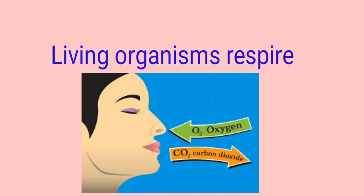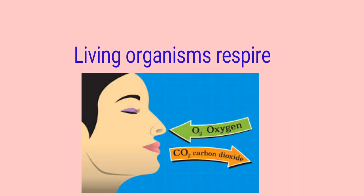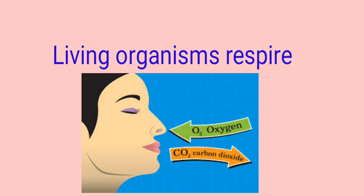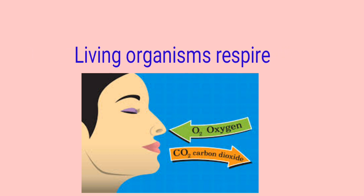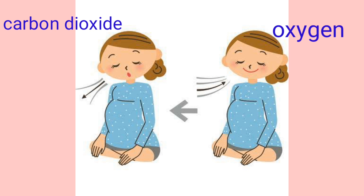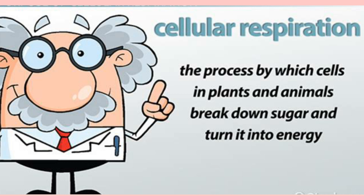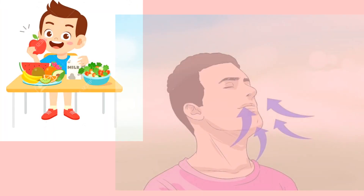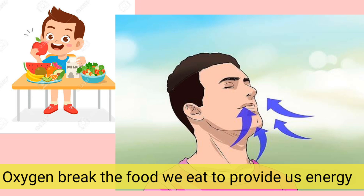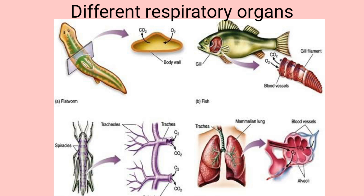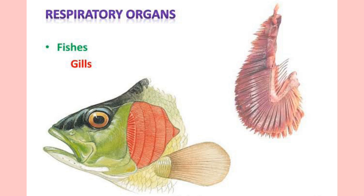The third characteristic of leaving things is that leaving things respire. Leaving things cannot live without respiration because it is a vital process — all leaving things need oxygen to stay alive. Respiration takes place in every cell, so it is called cellular respiration. Respiration provides the required energy to the body from food, as oxygen helps to break or burn the food to provide energy. Different animals have different respiratory organs — just have a look.